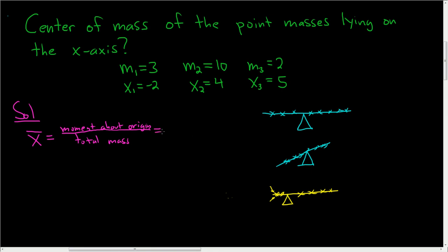The moment about the origin is the tendency of the system to rotate about the origin. So in this case, all you do is you multiply these.